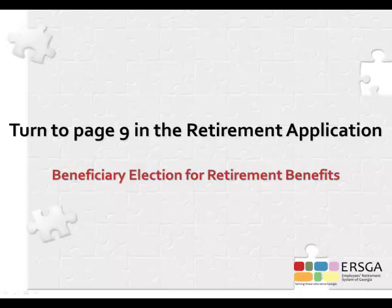Page 9 is where you will designate beneficiaries for your retirement income benefits. You have the ability to name multiple primary and secondary beneficiaries. If you name your estate as the primary beneficiary, there is no need to designate a secondary beneficiary. Note that naming an entity such as an estate, trust, or charity will not enable you to leave a lifetime payment to that beneficiary. If you name a beneficiary other than your estate, you must include a secondary beneficiary.